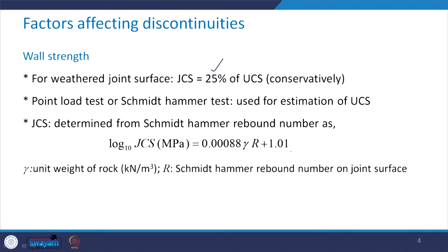JCS can also be determined from Schmidt hammer rebound number using an empirical expression. We have to be careful about the units — the JCS value obtained from this expression will be in megapascals, and we need to substitute the unit weight of the rock in kilonewtons per meter cube. R is the Schmidt hammer rebound number on the joint surface. You can carry that hammer in the field, conduct the test, get the value of R, substitute it in the expression, and obtain JCS.